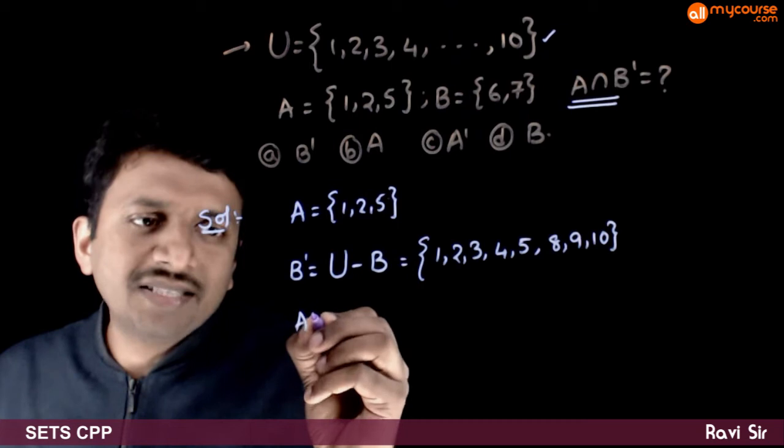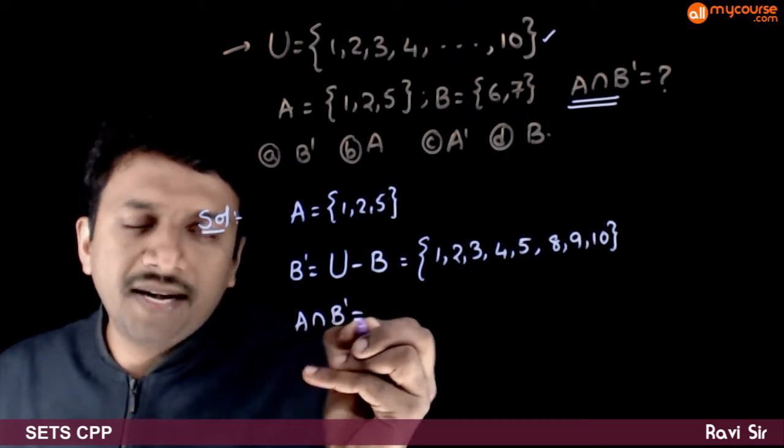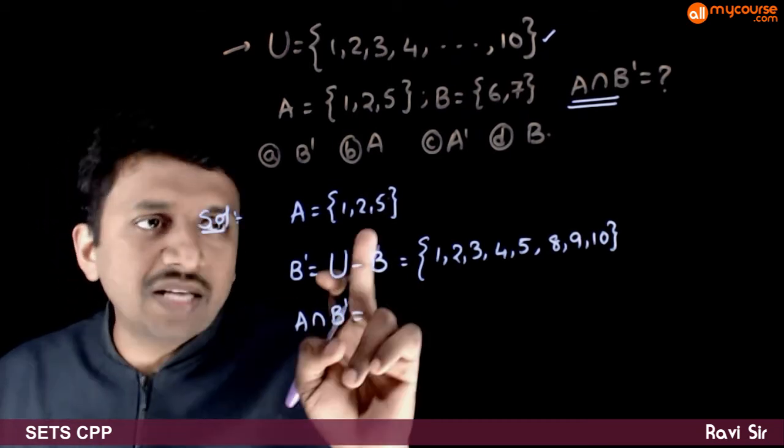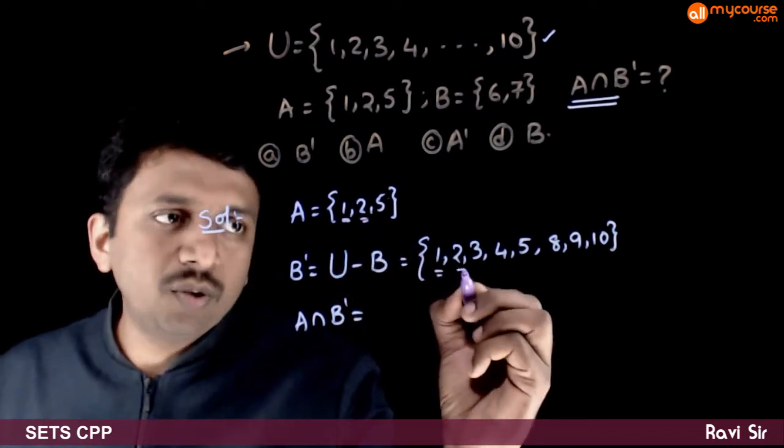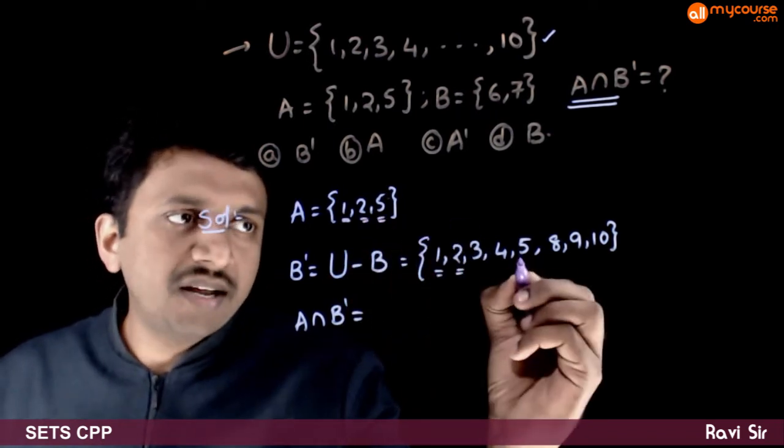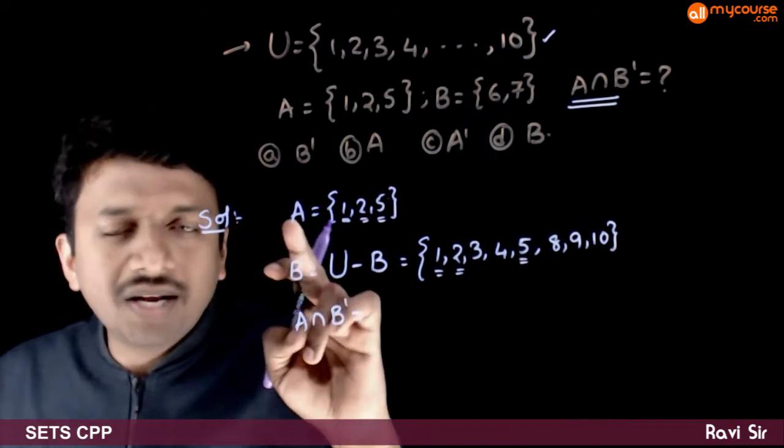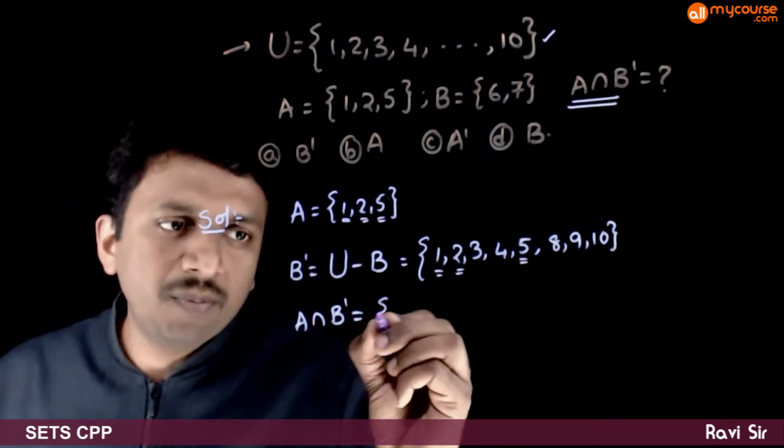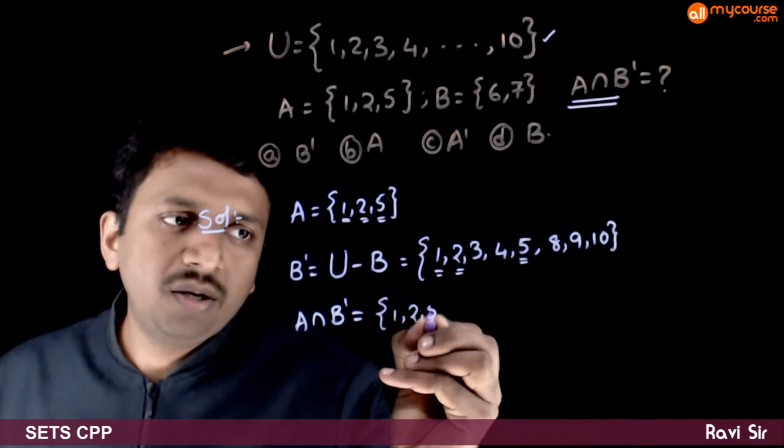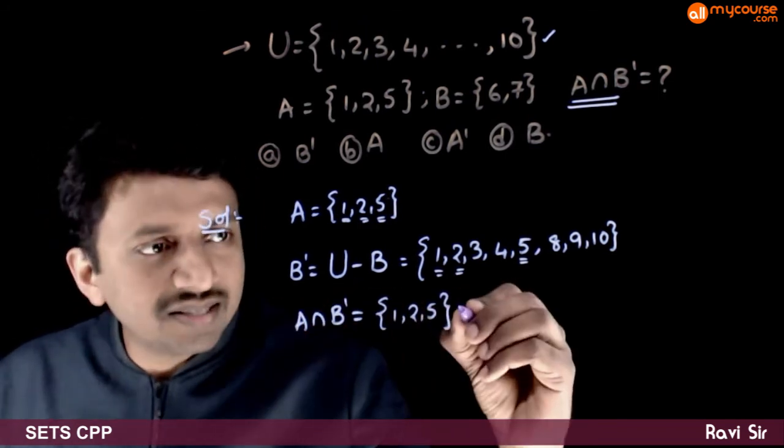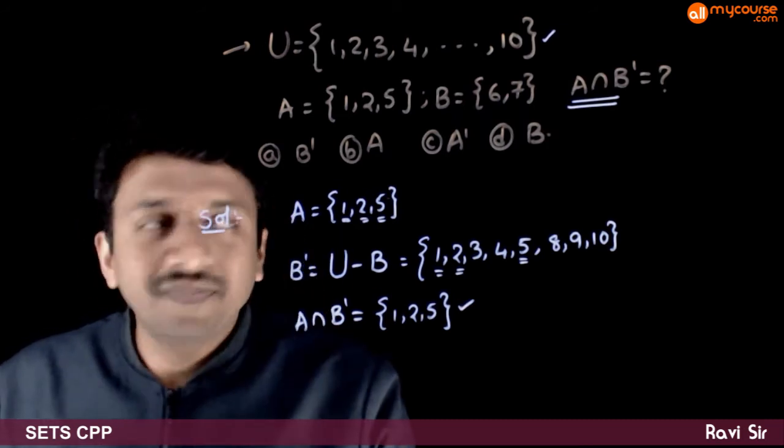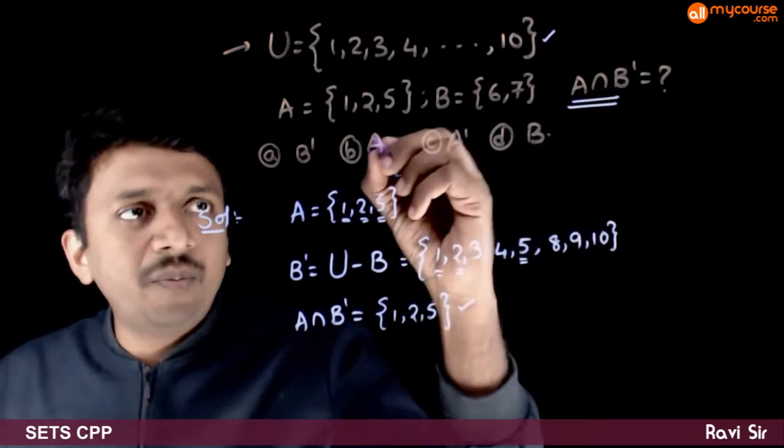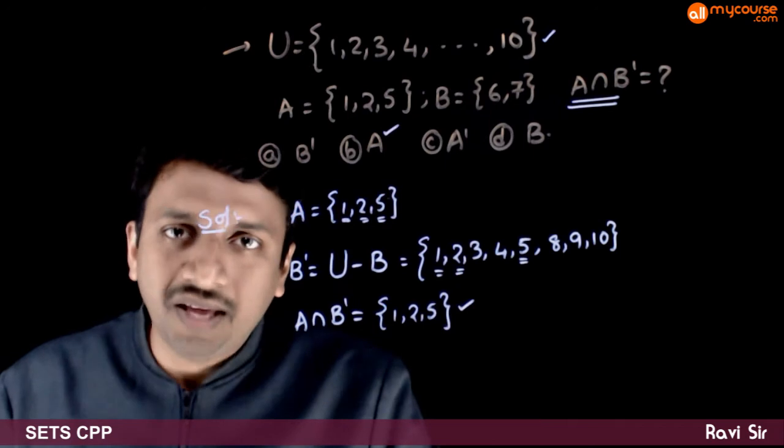So what is the intersection of A and B complement? As you can see, 1 is there here, 1 is there here. 2 is there here, 2 is there here. 5 is there here, 5 is there here. So A intersection B complement is 1, 2, 5. This is exactly equal to A. So A intersection B complement equals A.